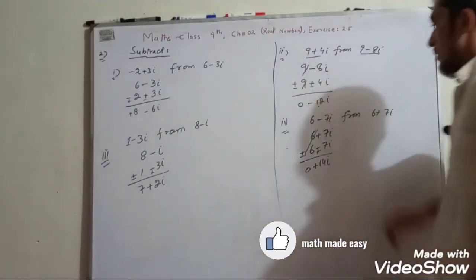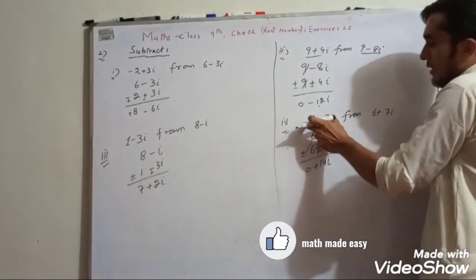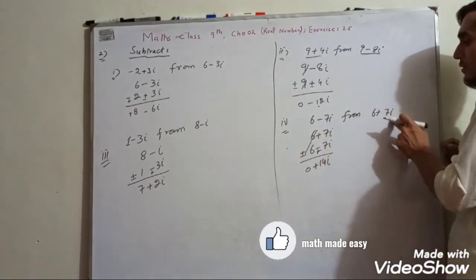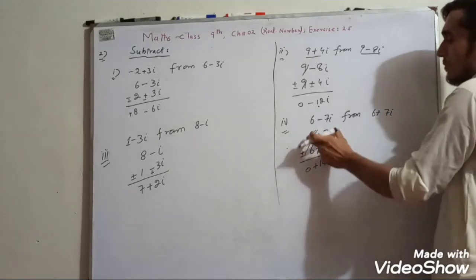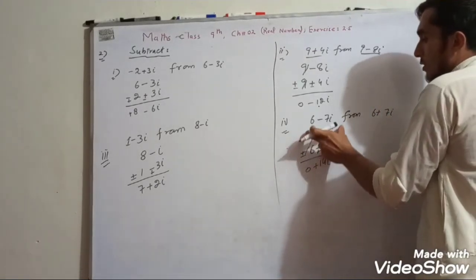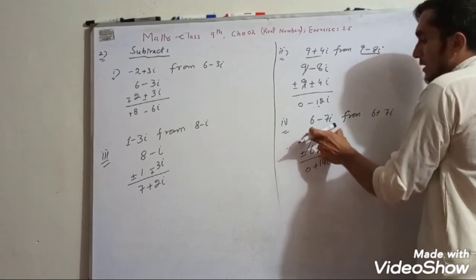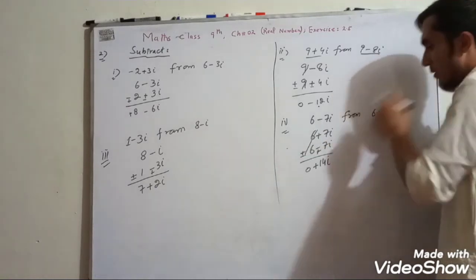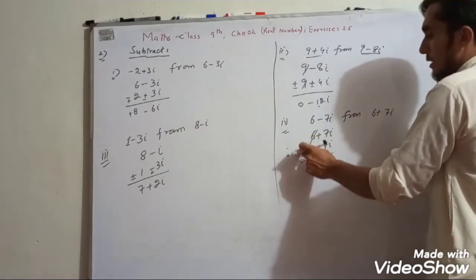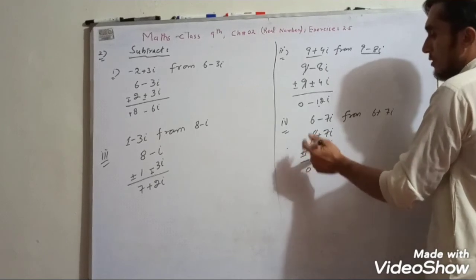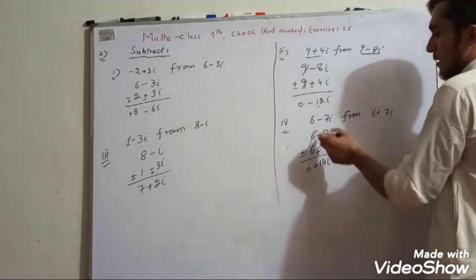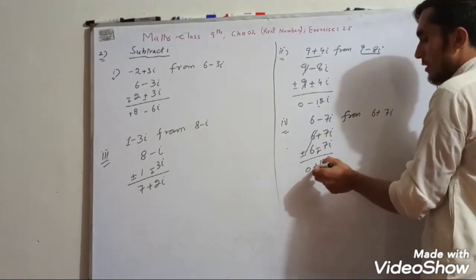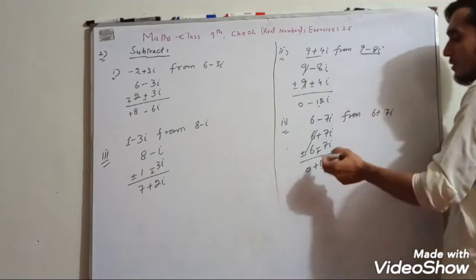Four questions are done. Subtract 6 minus 7 iota from 6 plus 7 iota. The second number's sign changes. 6 iota plus 7 iota, and 6 minus 7 iota with sign change gives 10 plus 10. Then 7 plus 7 is 14, giving 0 plus 14 iota.